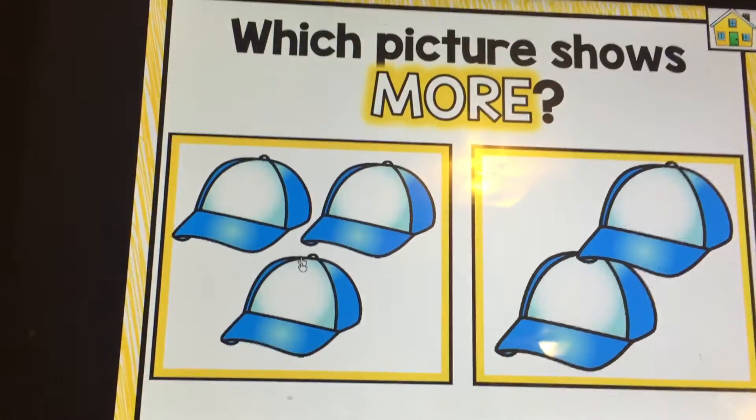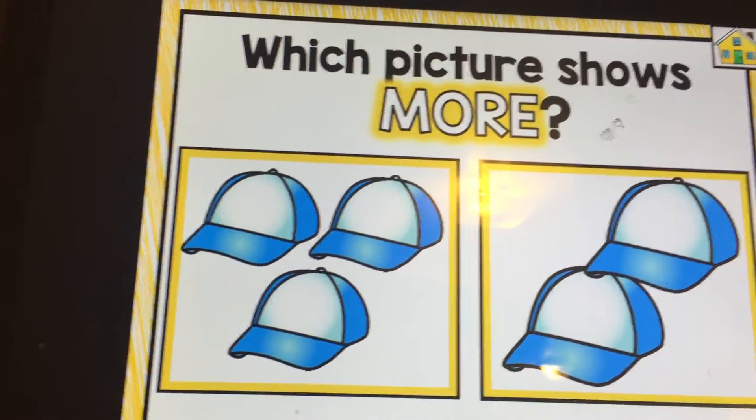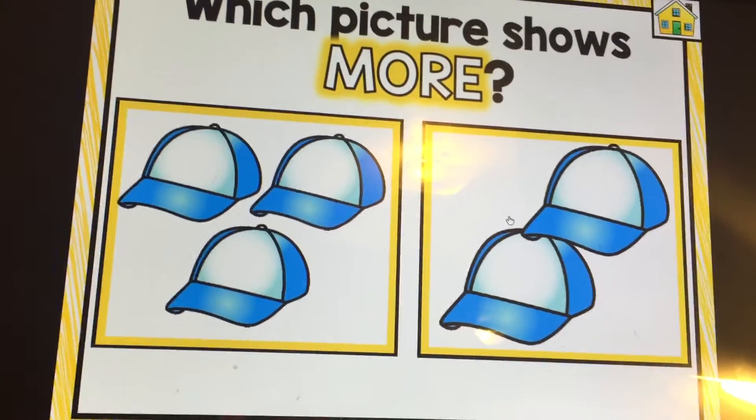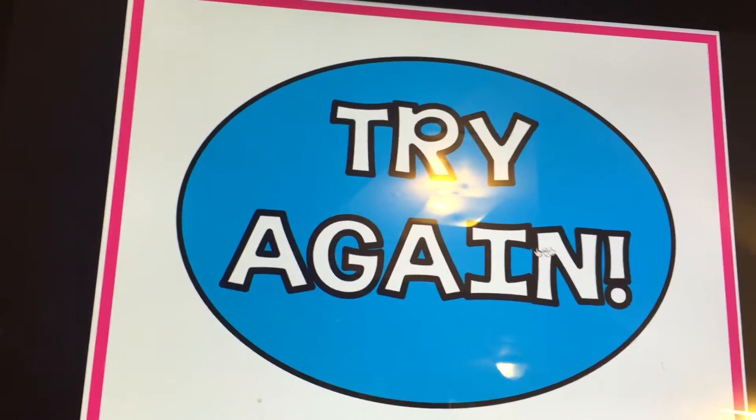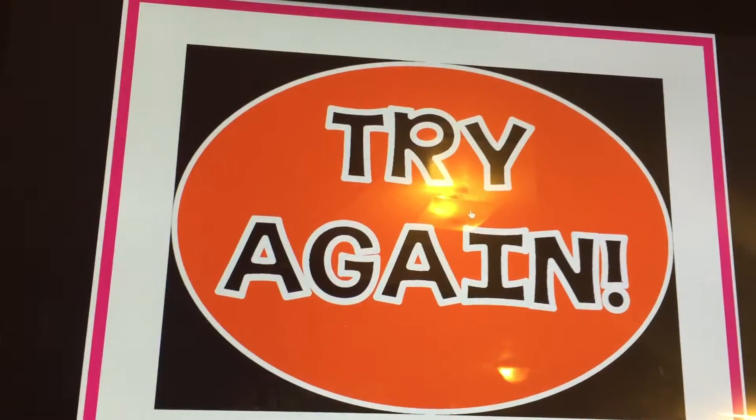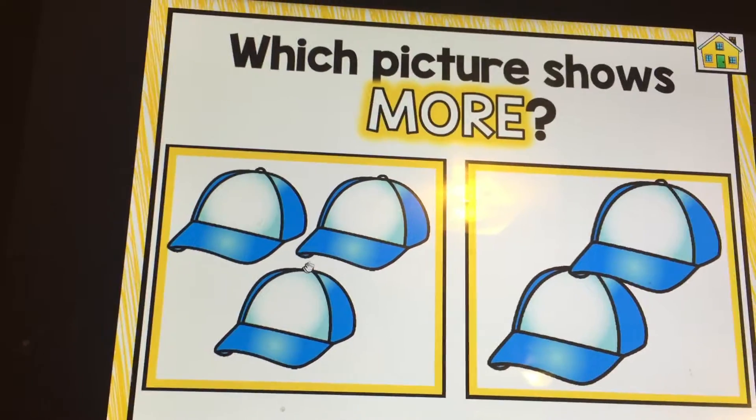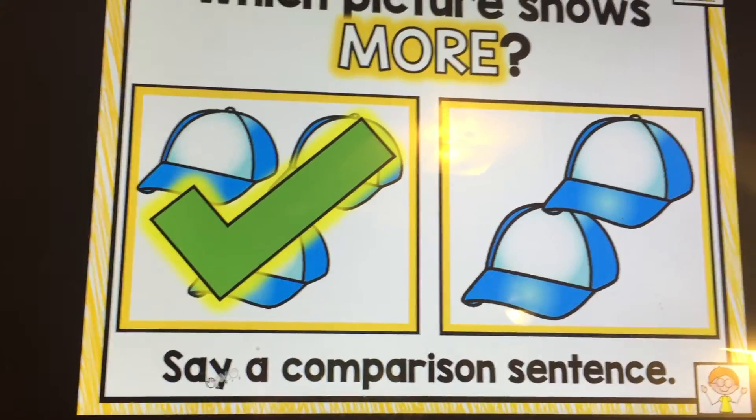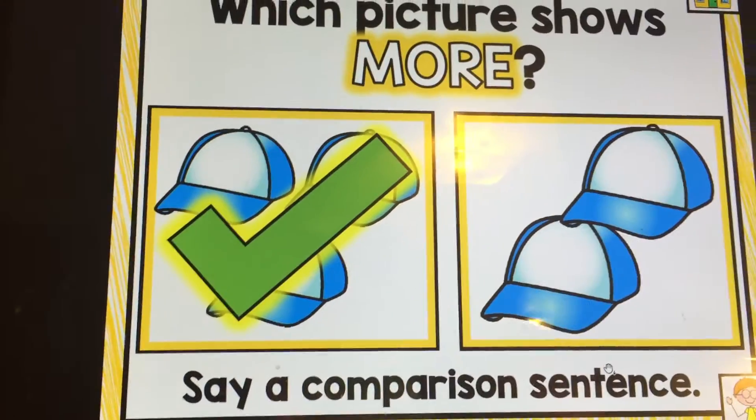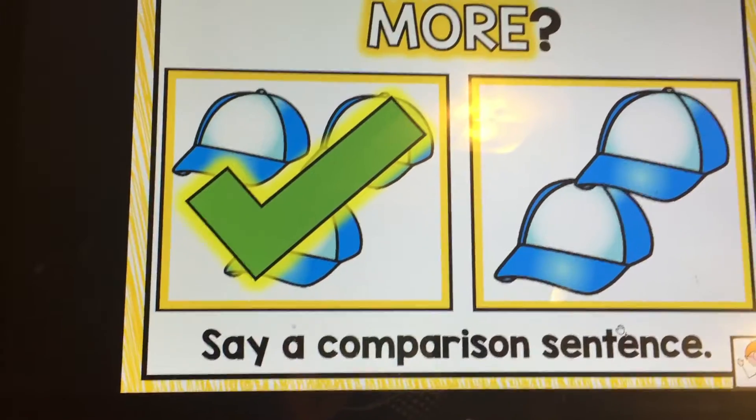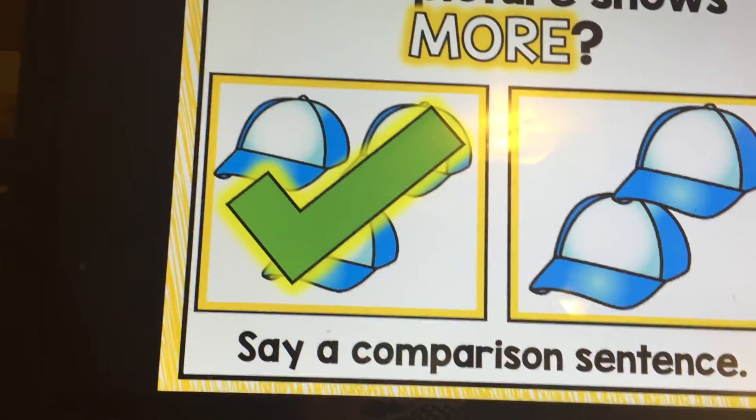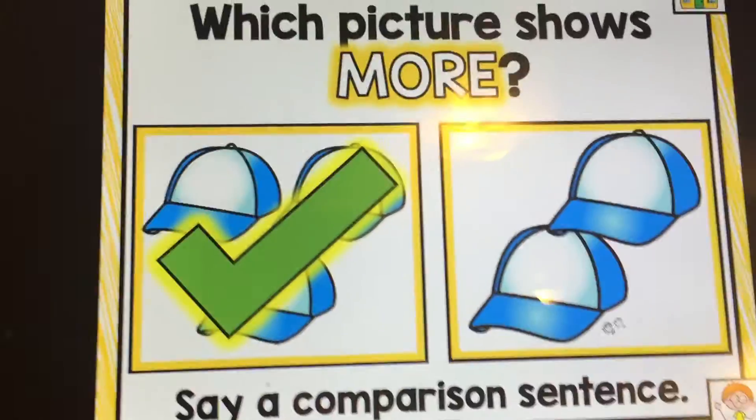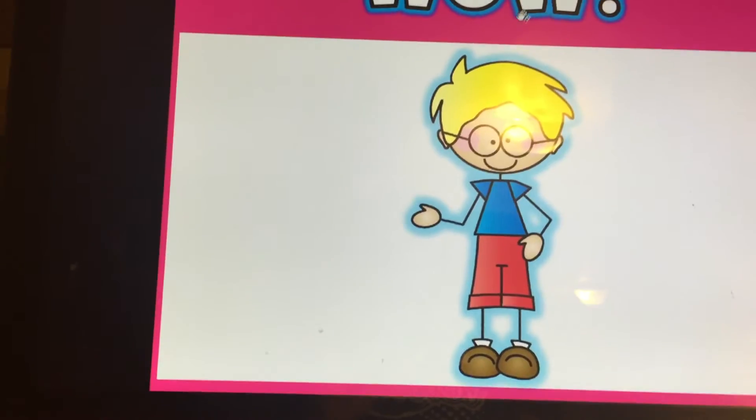Okay, comparing numbers. So which picture shows more? And somebody may come up and might not understand this vocabulary and they may click this button. Always click try again to go back. Okay, more is obviously three. Once they get the correct answer, the check mark comes up. It says say a comparison sentence. So once you model this skill, eventually your kids will be able to say something like this. Three is more than two. Three hats is more than two hats. So good job. Wow.